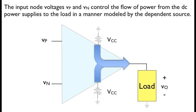Conceptually, as shown here, the dependent source models how the flow of power from the power supplies is routed to the output as directed by the input voltages, thanks to some very clever circuit design of the operational amplifier itself.